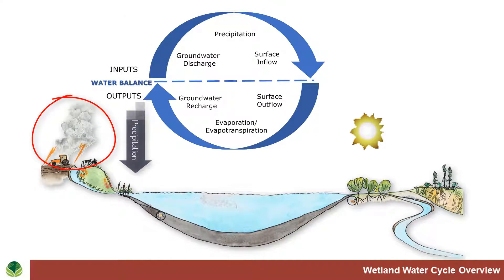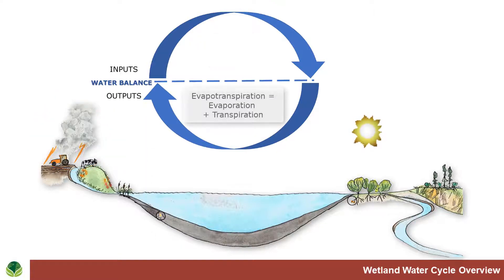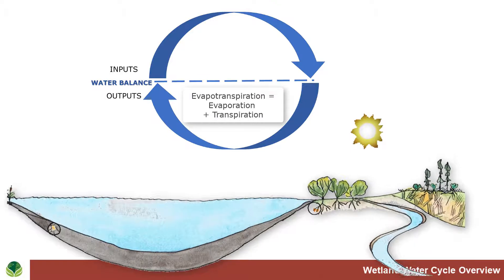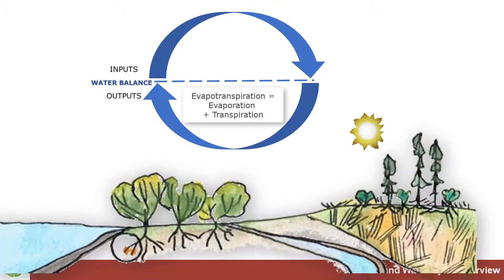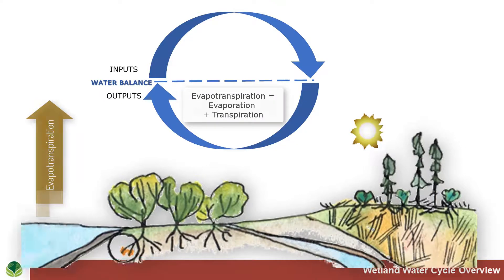Precipitation comes in the form of rain or snow — so that's the input. The other output is transpiration, which is the ability of plants through their foliage to release water to the atmosphere.